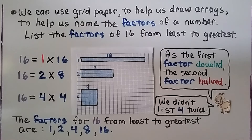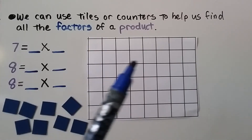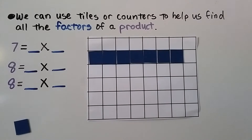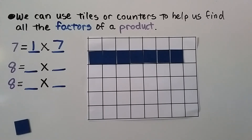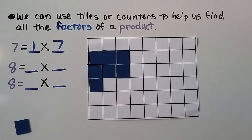Not every group of factors will follow that doubling/halving pattern, but many will. We can use tiles or counters to find all the factors of a product. For 7: we put seven counters down and make one row of seven — that's 1 times 7. We can't make two equal rows because one would be missing, and we can't make three rows either. So the factors for 7 are just 1 and 7.